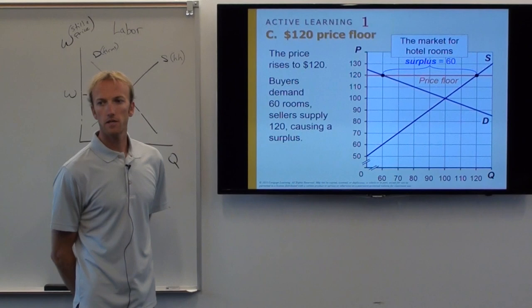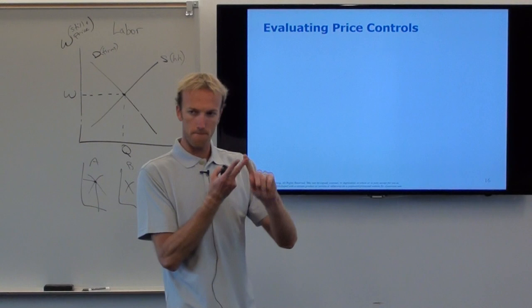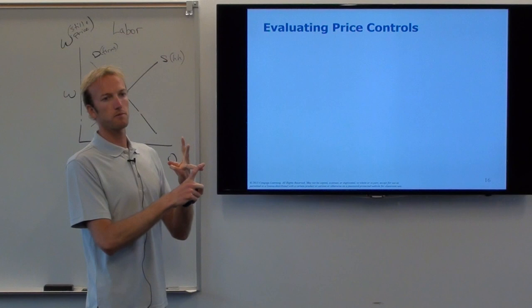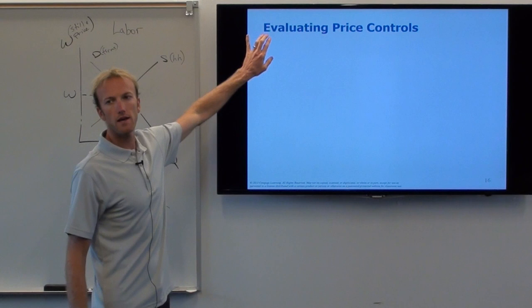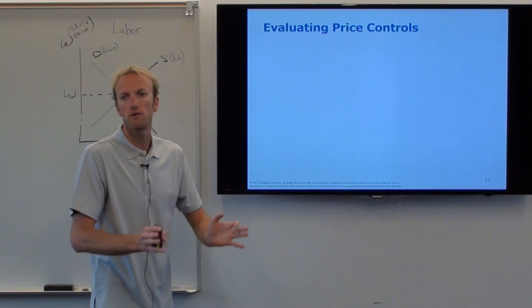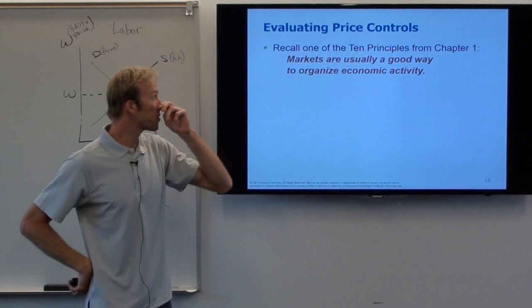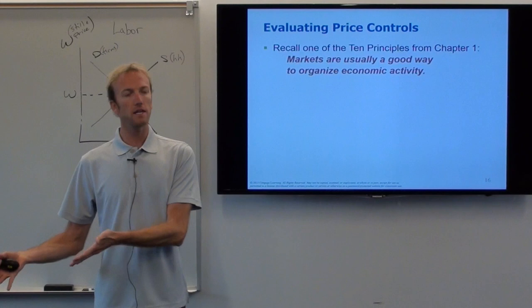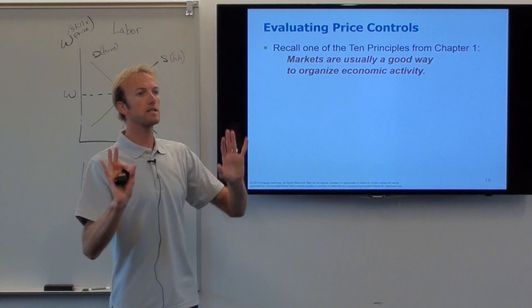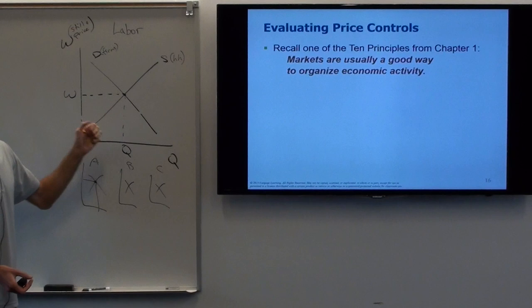Now that we've learned about the two main types of price controls — price ceilings and price floors — the third concept is taxes, but first let's ask: does this help the marketplace or make it worse? Remember one of the 10 principles from Chapter 1: markets are usually a good way to organize economic activity. It's better when we let the market decide the price — when we let the equilibrium price or equilibrium wage be as the market determines and don't let the government try to change the price.